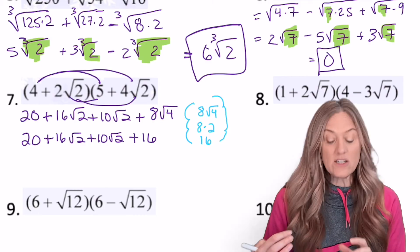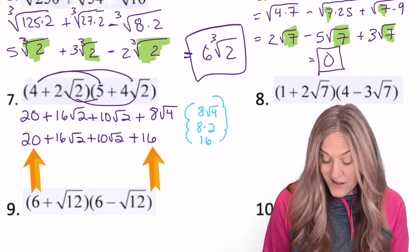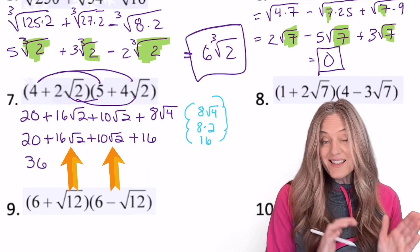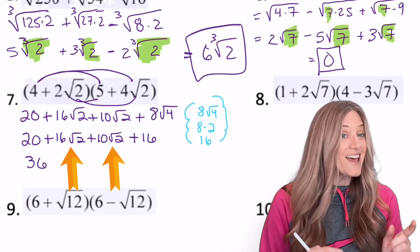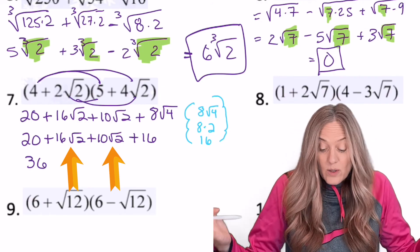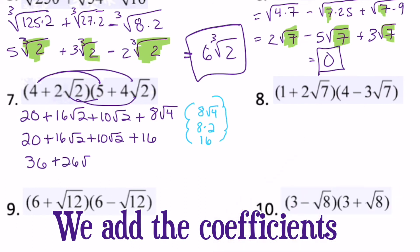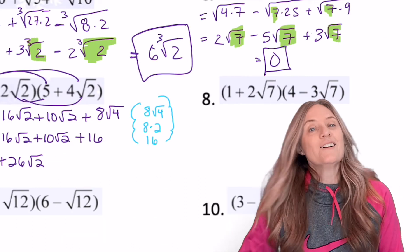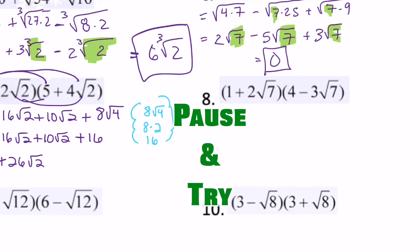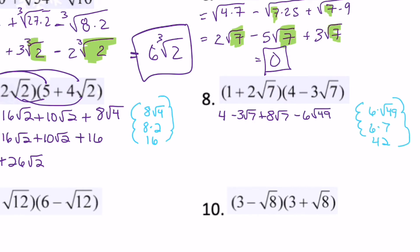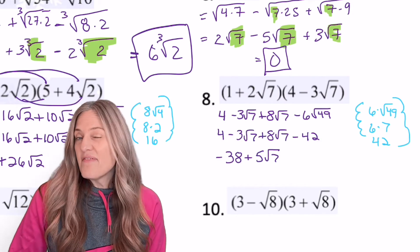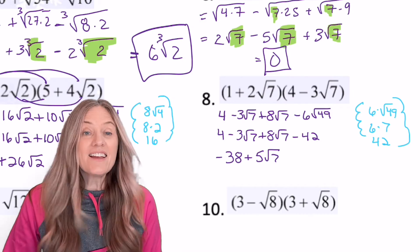You see that I did a side note to simplify that 8 times square root 4. So 8 times square root 4 is 8 times 2, or 16. Now we go ahead and combine like terms. 20 plus 16 is 36. And then 16 root 2s plus 10 root 2s gives us a total of 26 root 2s. Try number 8. Negative 38 plus 5 root 7. Take a look at number 9.